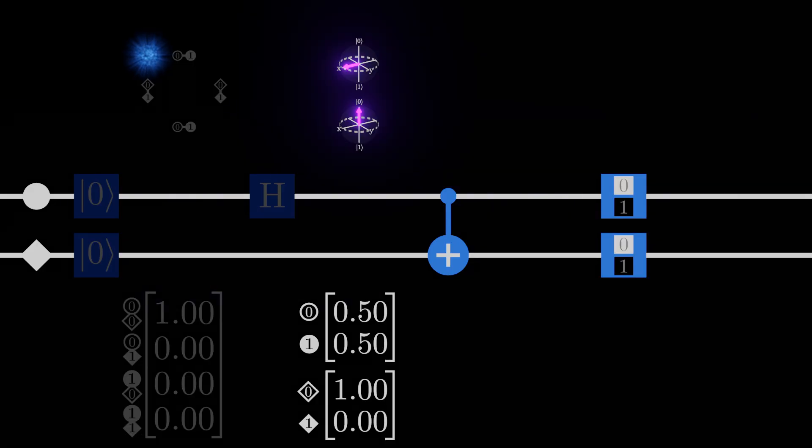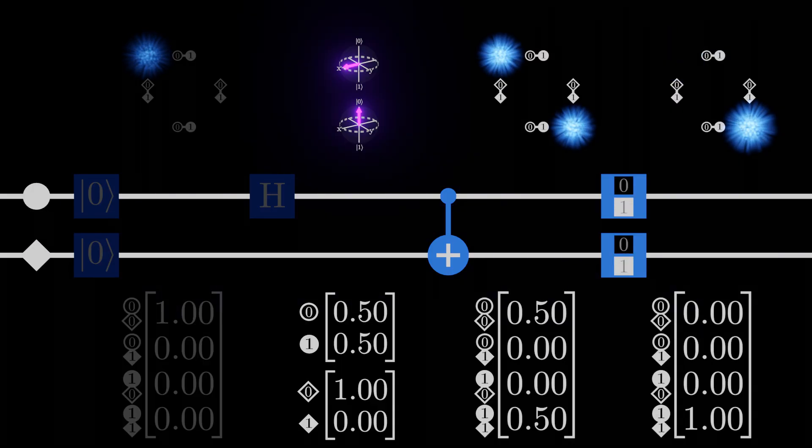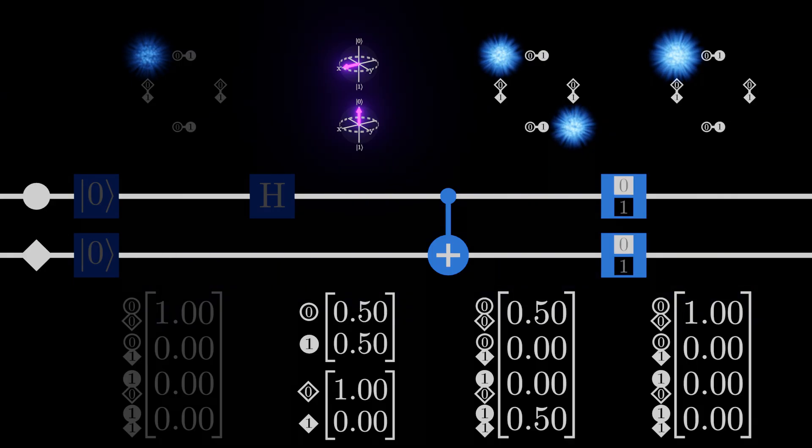Just like last time, it's convenient to say that, in between the control-not and the measurement gates, the system of qubits remembers the different measurements it can produce. We'll later look at an experiment that proves this to be the case.